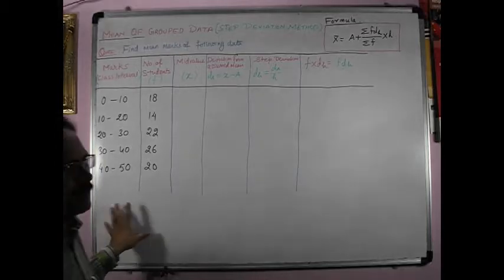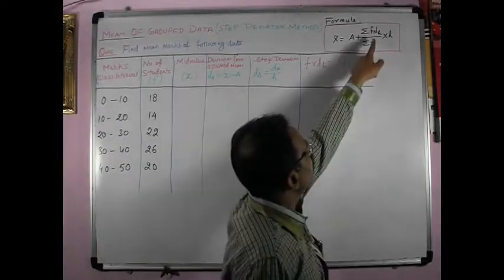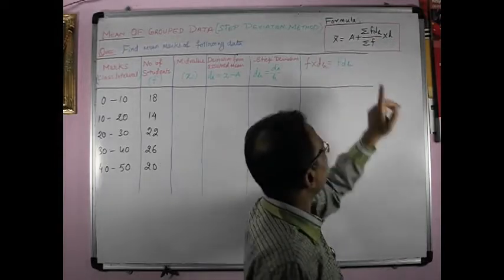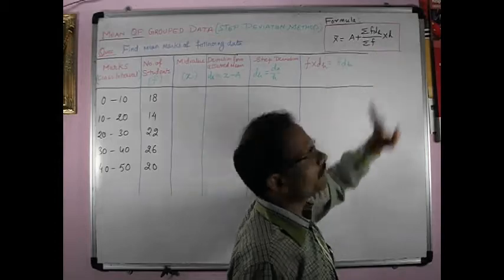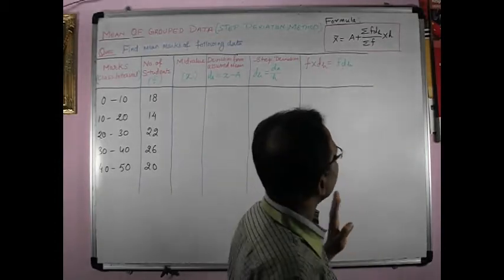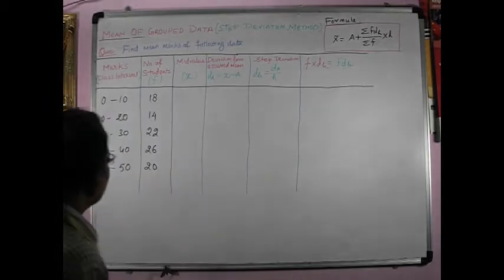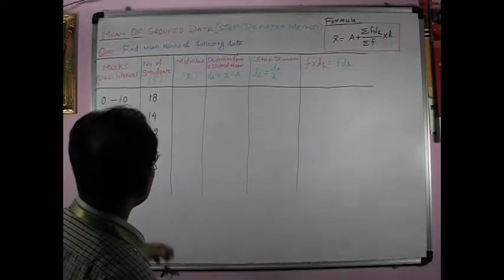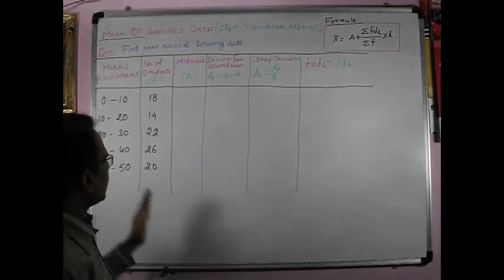Now, what we have to do? We have to find in this question dh and e. F we have, h we have to find out. These variables we have to find out. How we will find it out? I will explain to you. First of all, in grouped data, if you find out the mean, find out the mid-value.